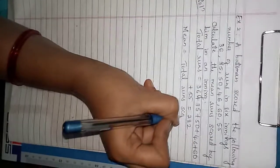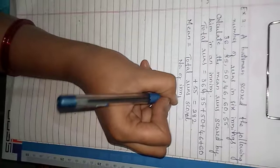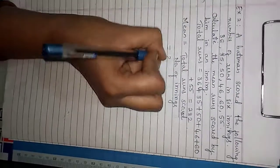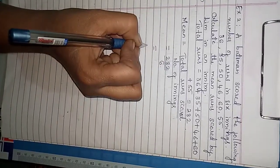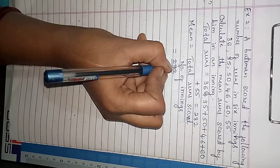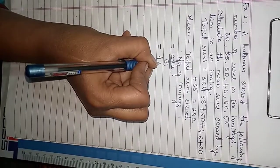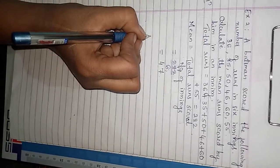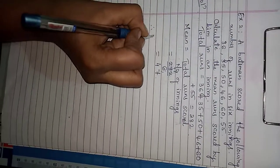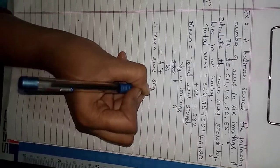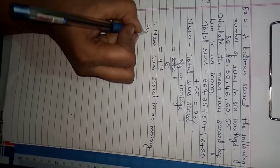Therefore, mean equals total runs scored divided by number of innings. Total runs are 282 divided by 6. Dividing gives 47. Therefore, mean runs scored in one inning are 47.